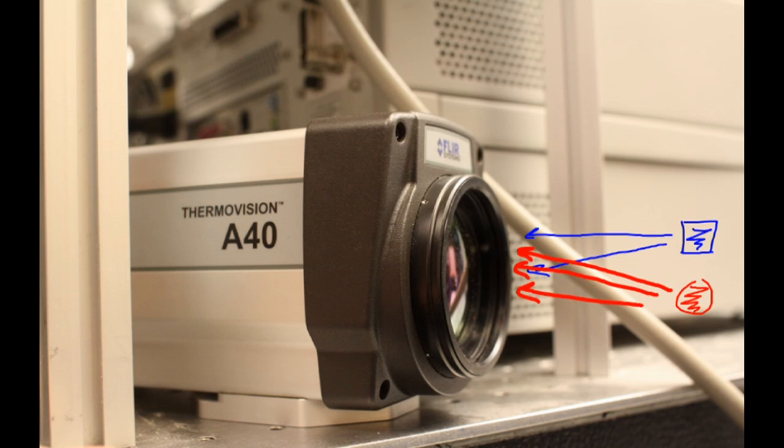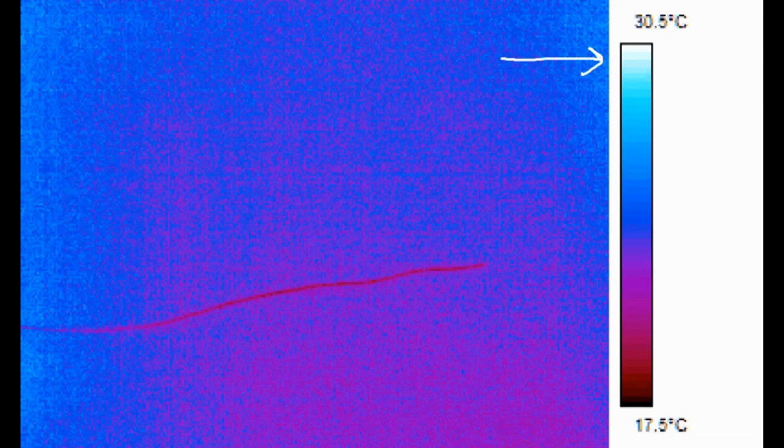The camera records this radiation and creates a picture. The colors in the picture represent temperatures. Hotter temperatures are lighter colors and colder temperatures are darker colors.